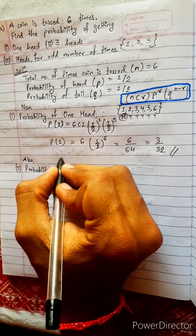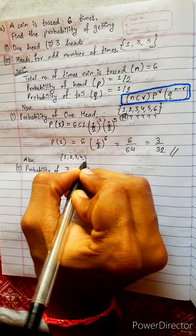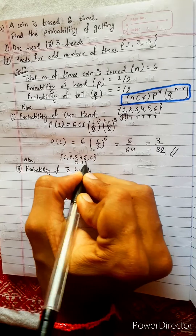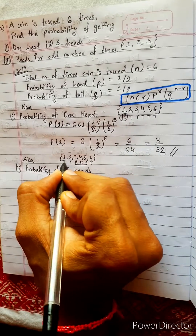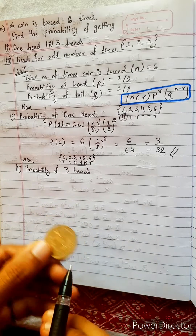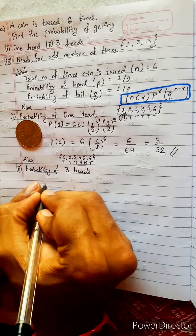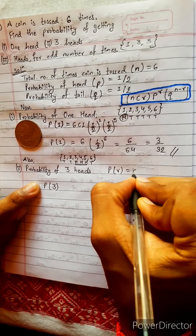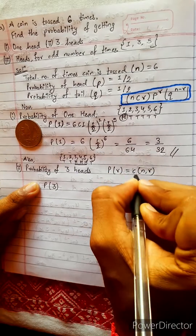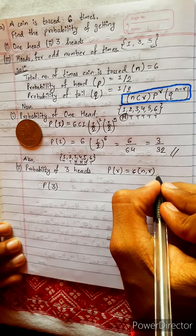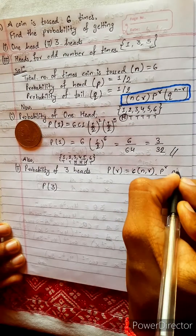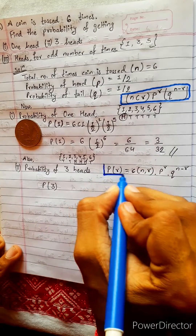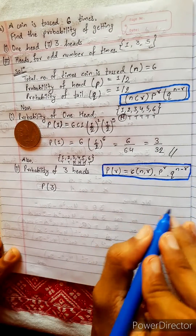Probability of three heads — what does this mean? This means out of six total experiments, we need three heads. Suppose, anywhere — head, head, head. It is represented by P(3). Our formula is P(R) equals N C R, multiplied by P power R, and Q power N minus R. You can also write it as N comma R — it is the same thing. These formulas are exactly the same, just a different method of writing.